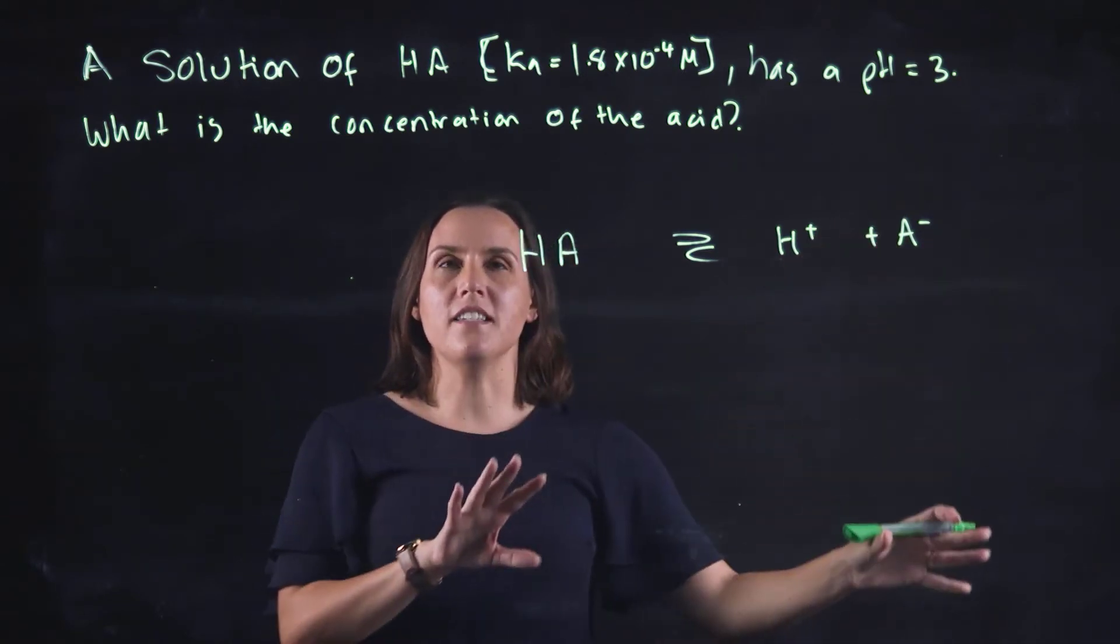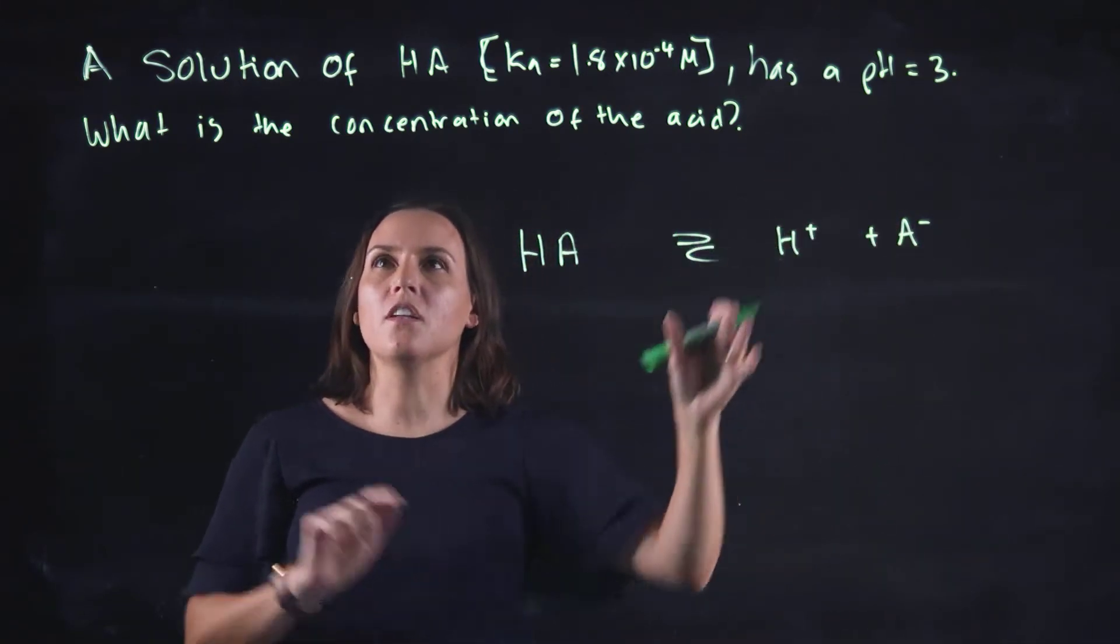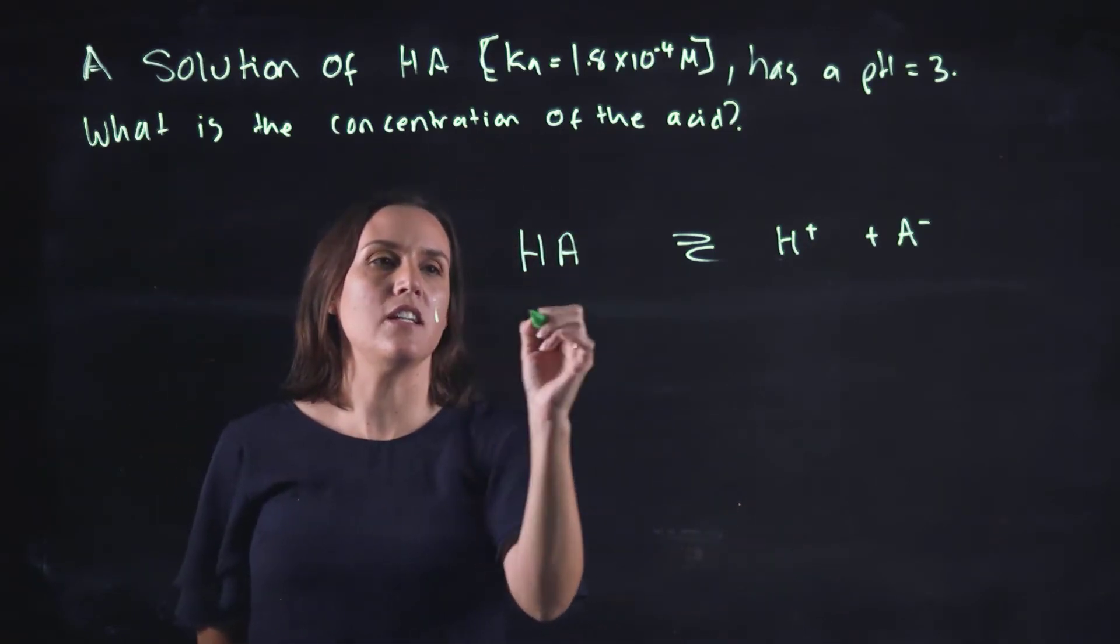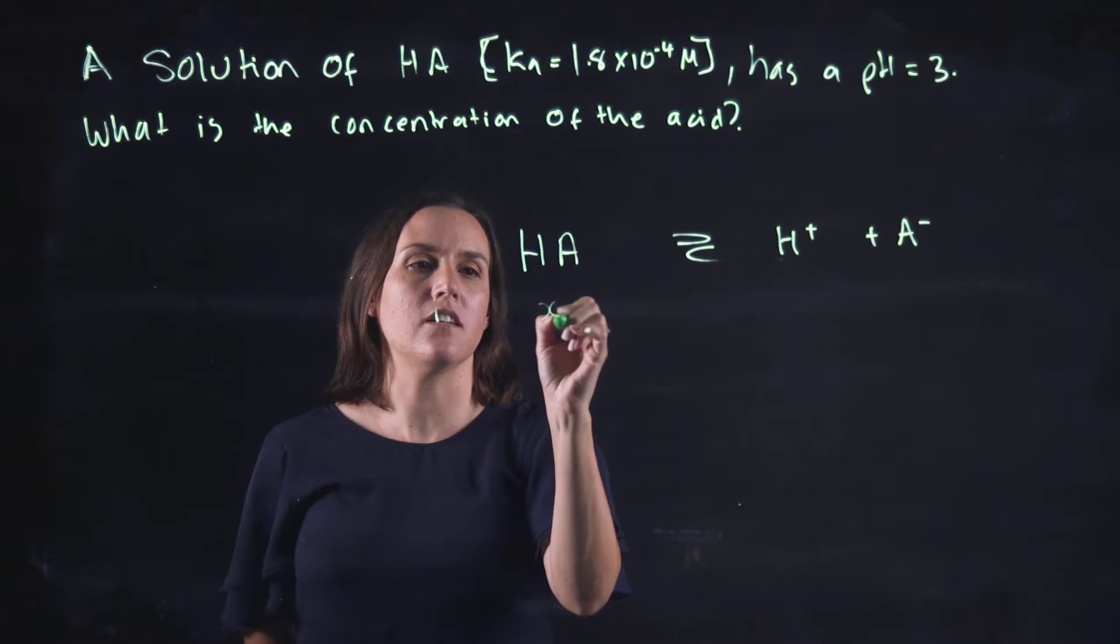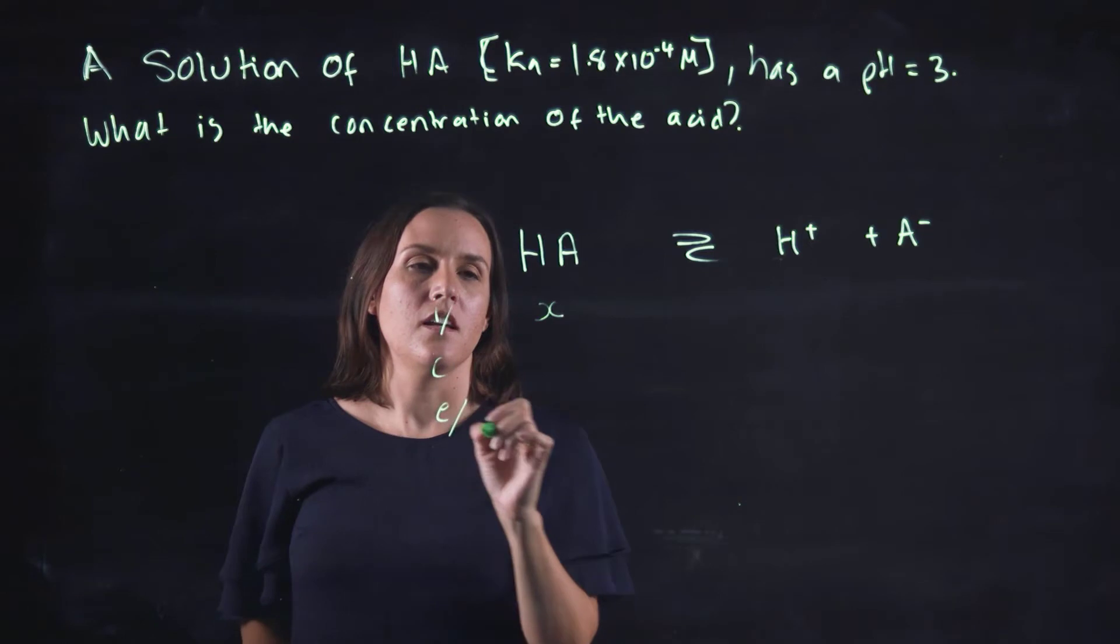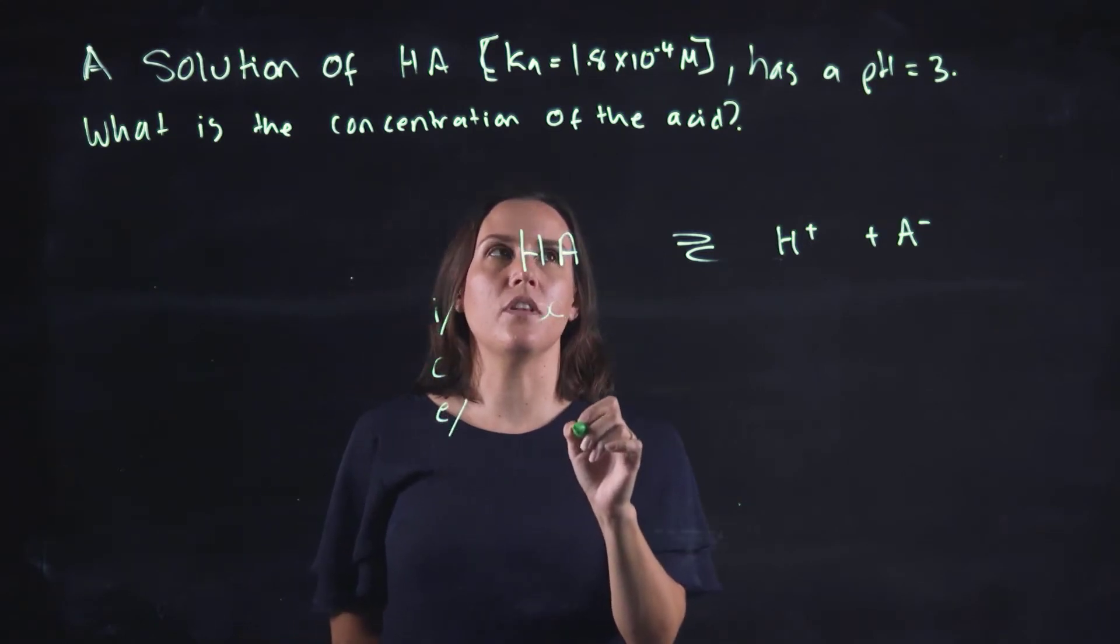Now let's fill out our ICE table with the information that we've got. We want to find out the concentration of the acid. So that's our initial acid concentration here. That is what we're trying to find out.